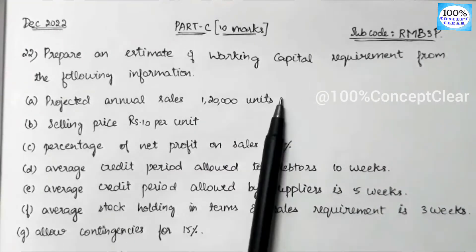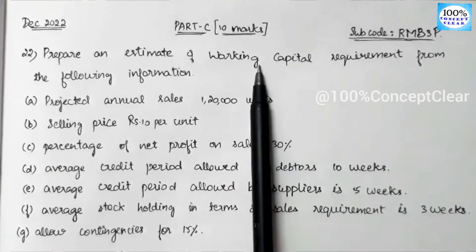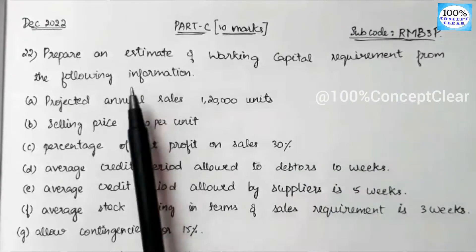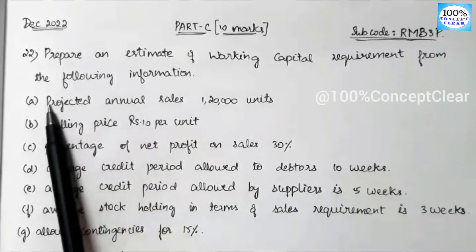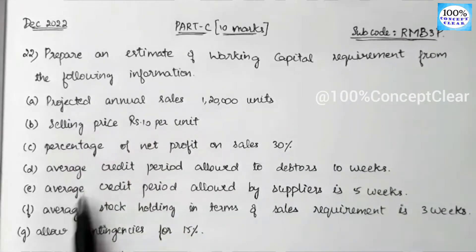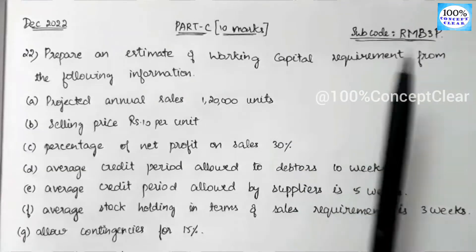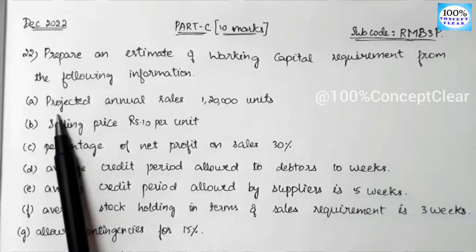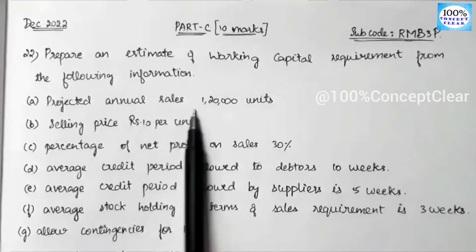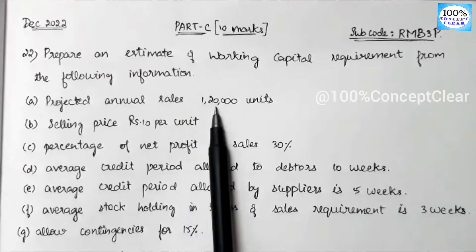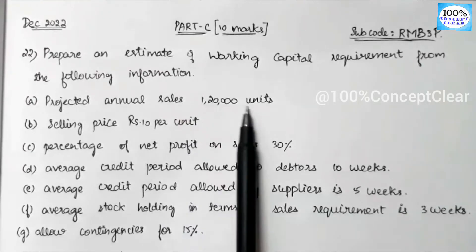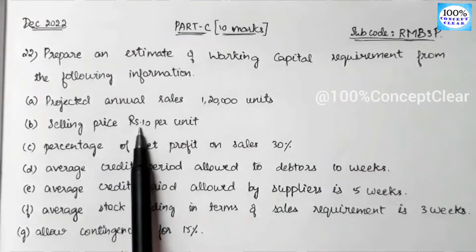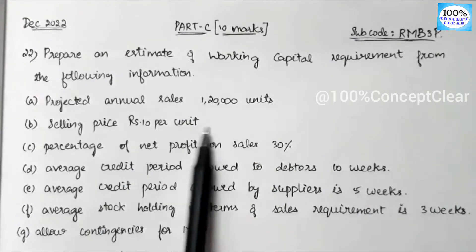The question asks: prepare an estimate of working capital requirement from the following information. We have a working capital requirement topic. The given information includes: projected annual sales of 1,20,000 units and selling price of Rs. 10 per unit.